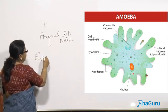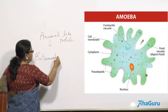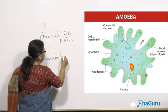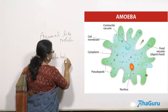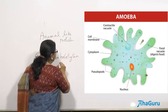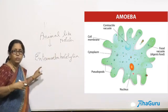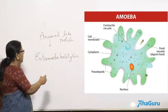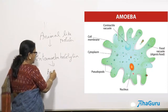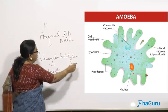There is a group of amoeba called entamoeba. This is called entamoeba histolytica. It lives inside the human digestive tract and causes the most common form of amoebic dysentery.